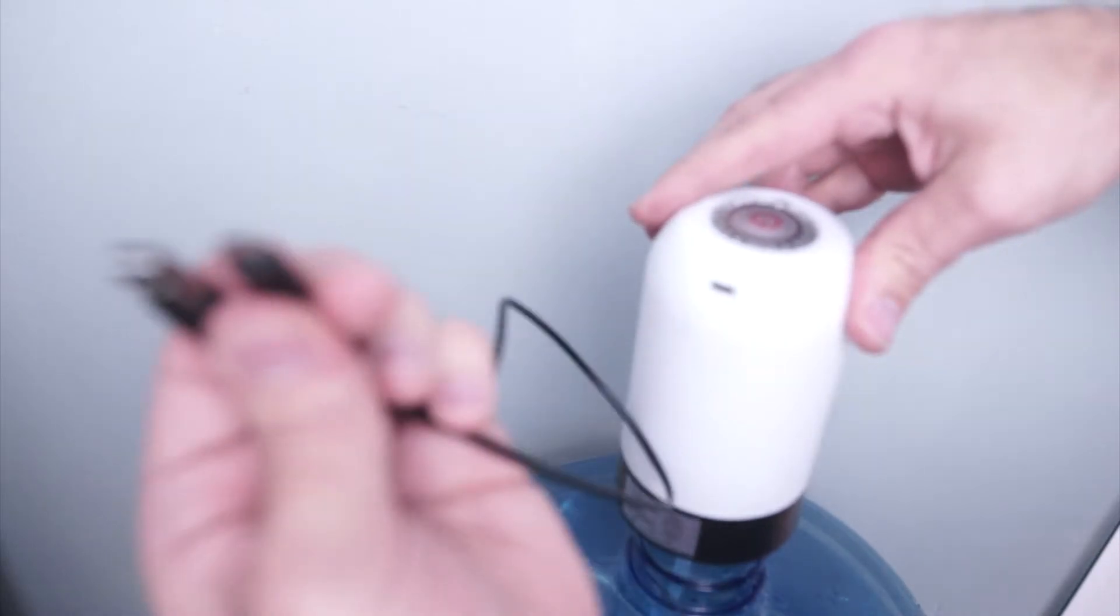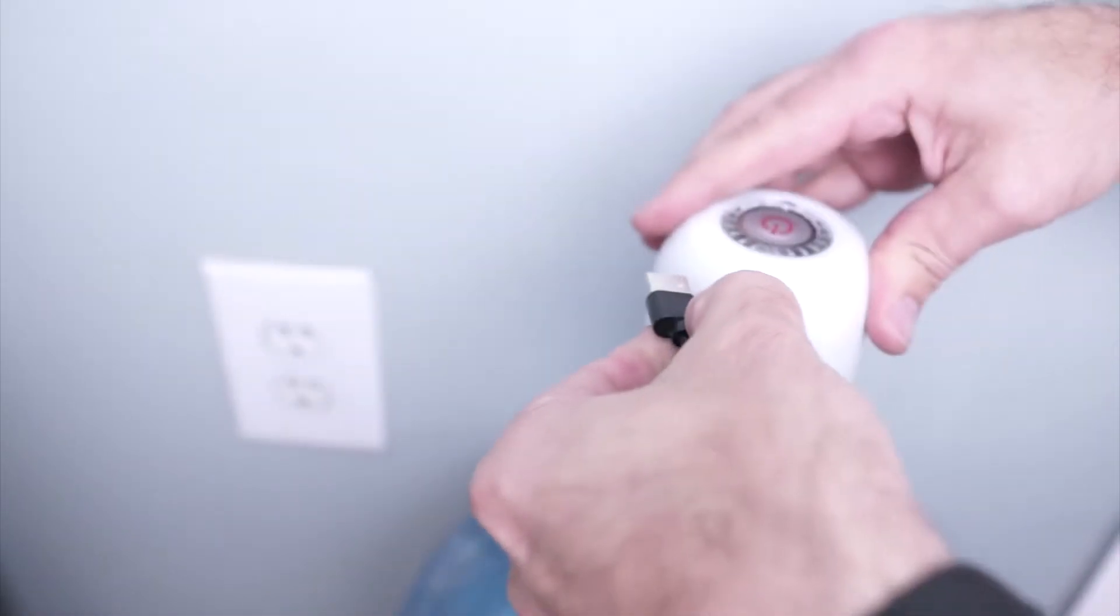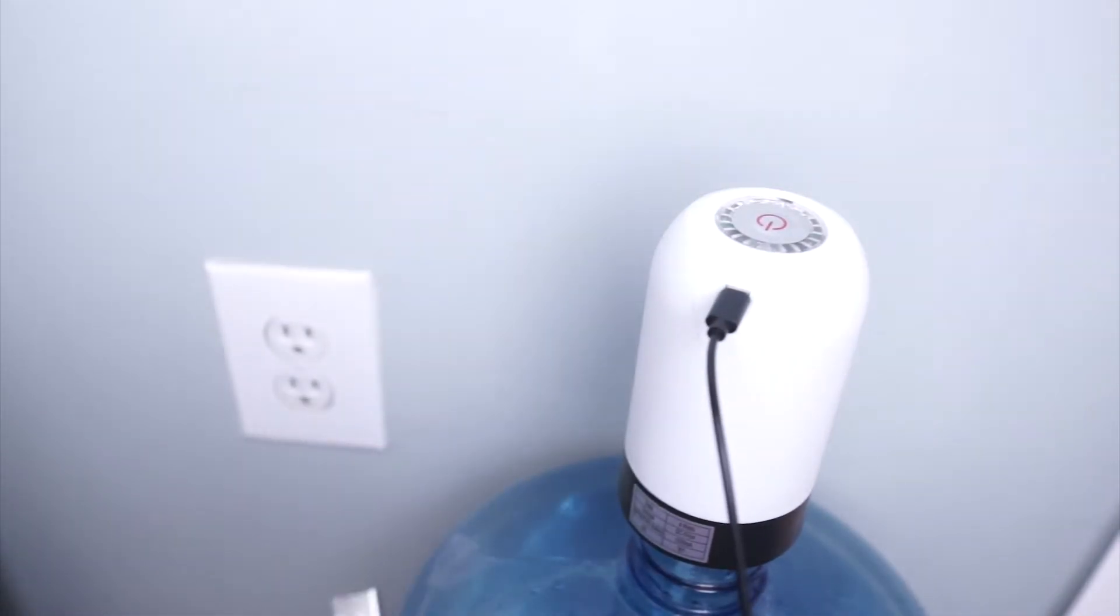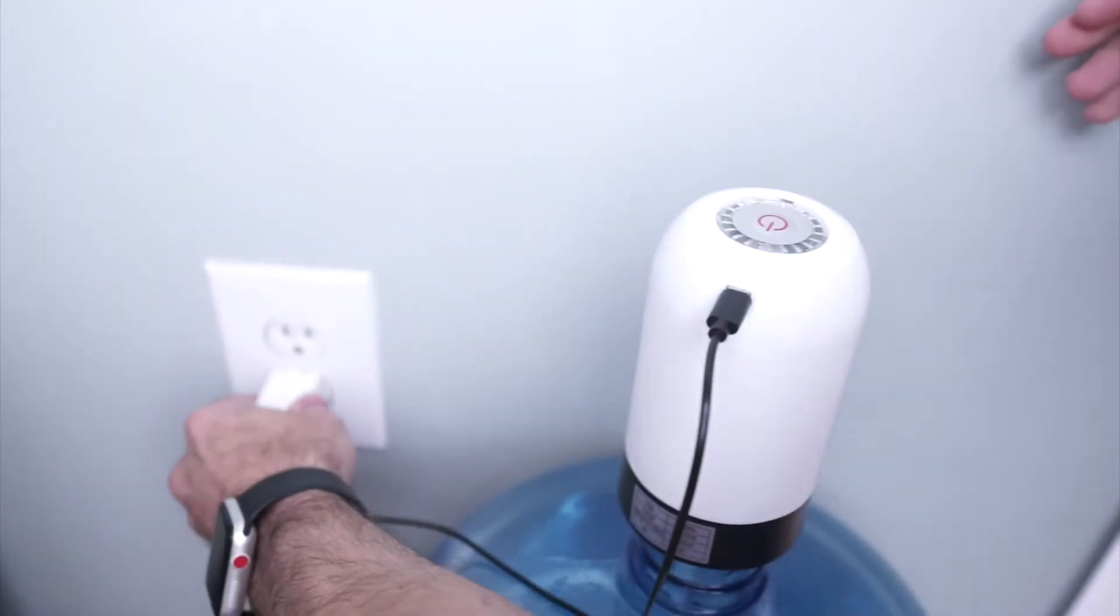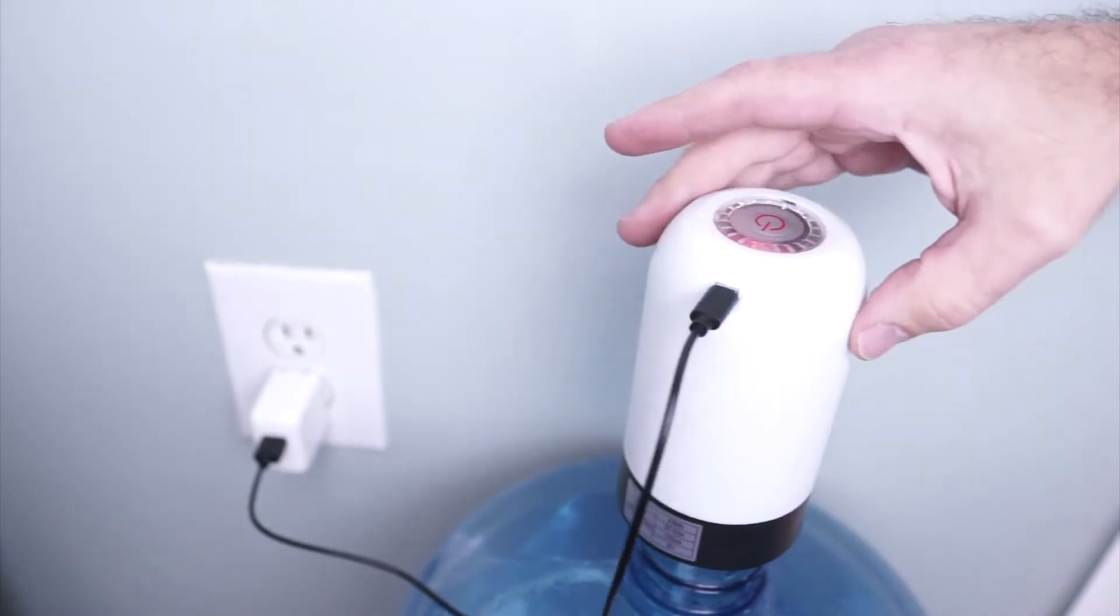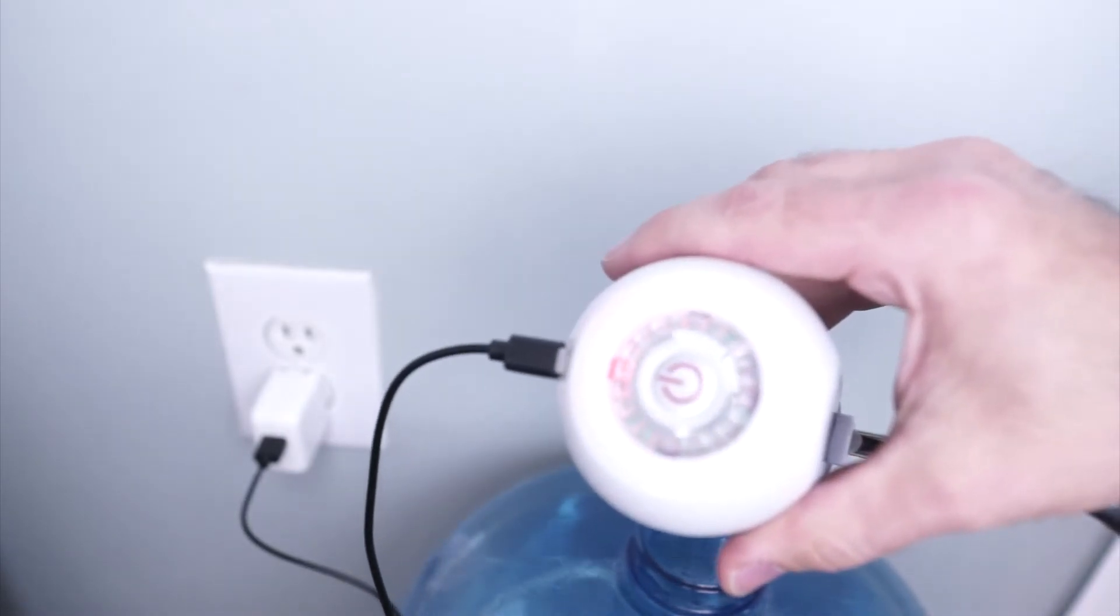Now charge the pump. Insert the small end of the USB cable into the pump, then insert the other end of the charge cable into a 5-volt USB charger. A 5-volt USB charger is not included with the 5-gallon pump. When the pump is charging, a red LED will illuminate in the on-off button ring.